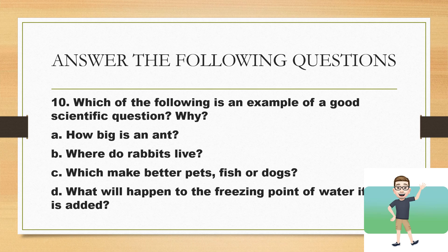Number 10. Which of the following is an example of a good scientific question? Why? A: How big is an ant? B: Where do rabbits live? C: Which make better pets, fish or dogs? D: What will happen to the freezing point of water if salt is added? So you're going to choose, I think, one statement or one sentence. And then if you think that that sentence is a good scientific question, then you write why? Bakit siya scientific question?